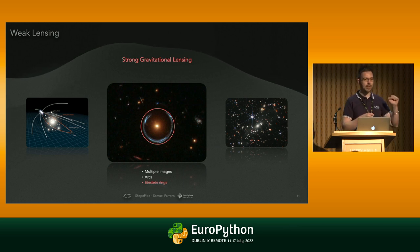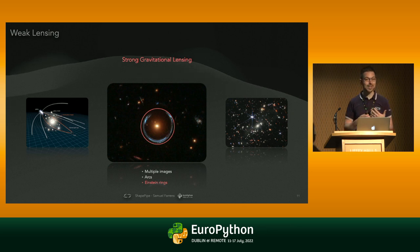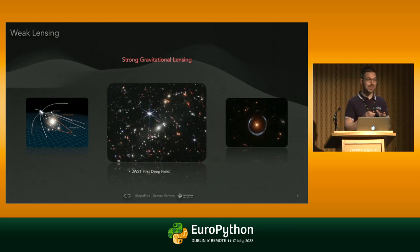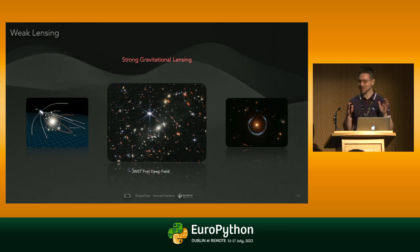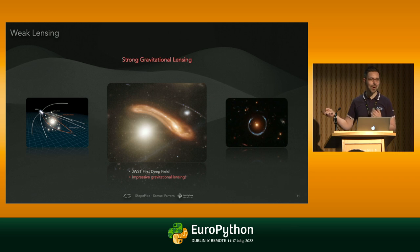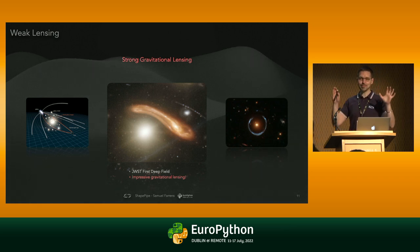Just to tie in with yesterday's fantastic keynote presentation about the JWST first deep field — this is the image that was released in the press recently, an absolutely stunning image. If we zoom in on that region, what you can see is an absolutely astonishing arc strong lens system from real data that we just got. This is absolutely incredible and really breathtaking. So now everybody in the room is familiar with strong gravitational lensing — but the section title is weak gravitational lensing, so what are we doing differently?